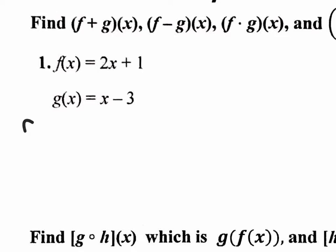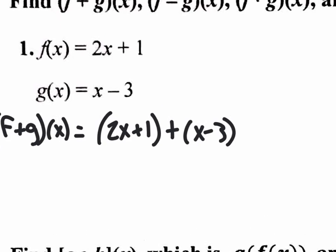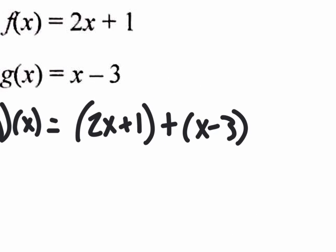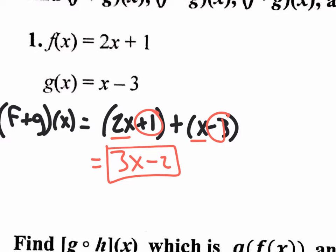So it's as simple as that. f plus g of x — this is just notation — but the actual work is 2x plus 1 plus the x minus 3. Normally it's a good idea to plug in with parentheses, but right here it's pointless because there's nothing to distribute; you're not multiplying, you're just combining like terms. When you combine 2x plus x, that's 3x. When you combine 1 and negative 3, that's negative 2. And that's your answer for adding f of x and g of x together.